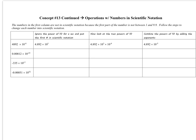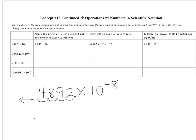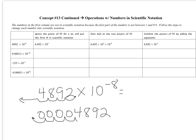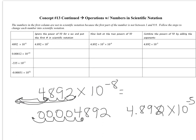To prove it: 4,892 times 10 to the negative 8th in standard notation means moving the decimal back 8 places, giving 0.00004892. If you then put that back into scientific notation, you move the decimal right 5 places to get 4.892 times 10 to the negative 5th. So rather than converting back and forth, we just use our exponent rules.